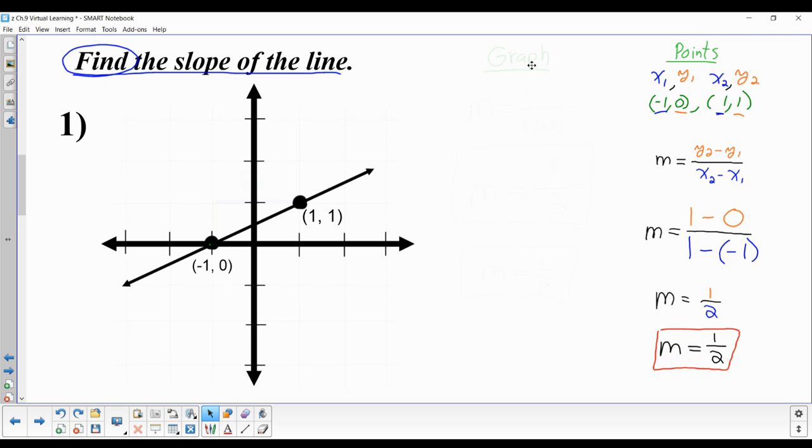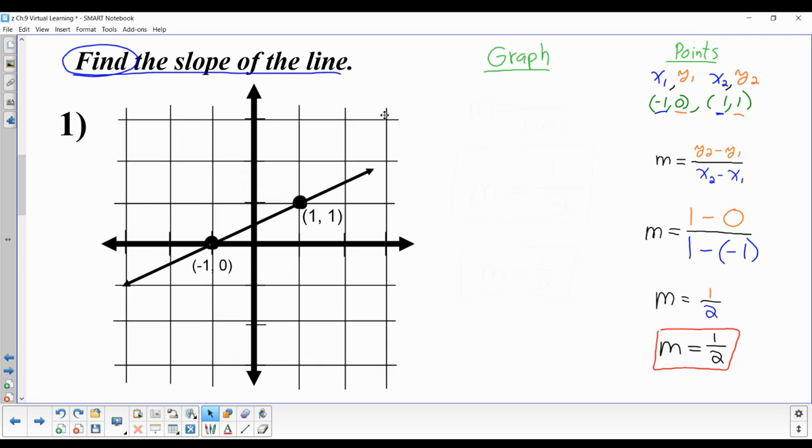Using the graph itself is actually simpler, easier, and quicker. We still write the formula: slope equals rise over run. The rise is how far up it goes. From the bottom point, we count up 1 until we're even with the higher point, so the rise is 1.